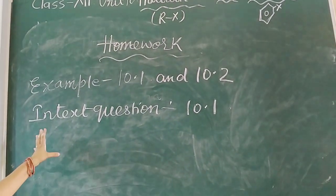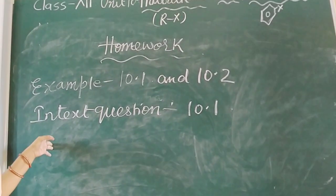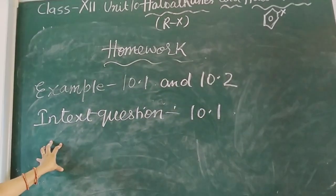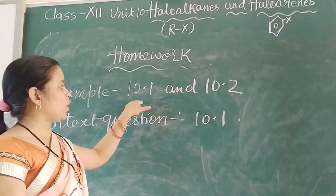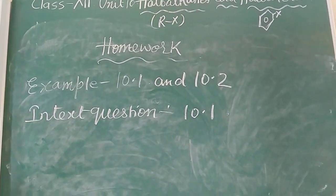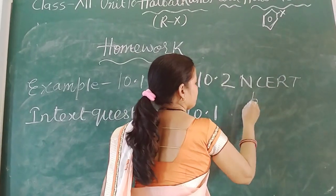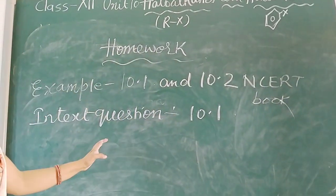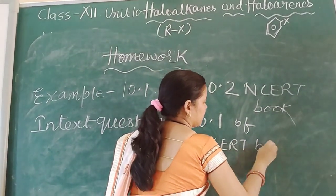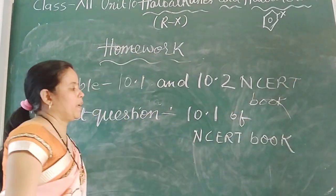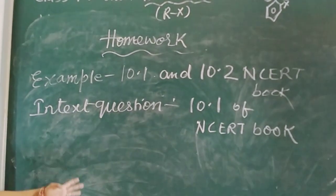Now it is time for homework. Make a fair register of more than 200 pages and do this homework — I will check it later. Do Examples 10.1 and 10.2 of your NCERT book, and in-text question 10.1 of NCERT book. The next topic, method of preparation of haloalkanes, I will explain in my next video. Bye.